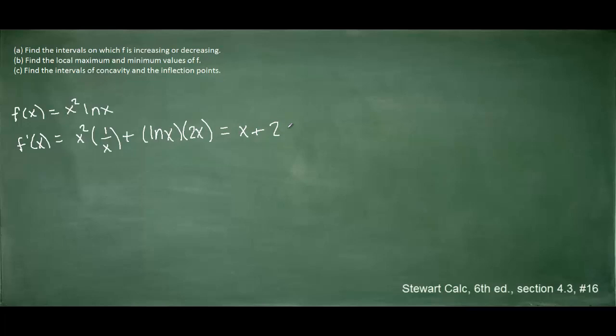To proceed in finding the critical numbers, we have to set the derivative equal to 0. To solve this equation, we need to factor out an x, and then we can set each factor equal to 0.